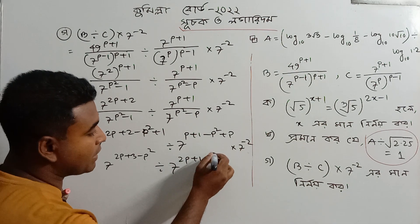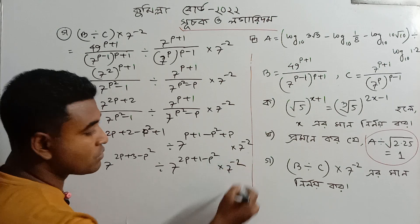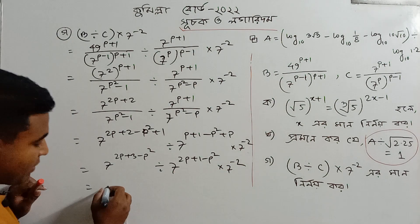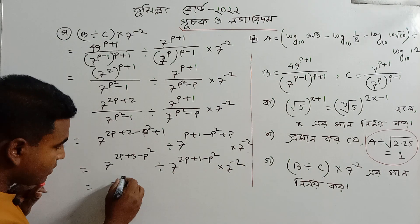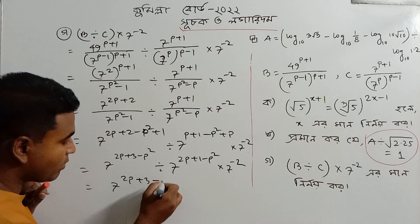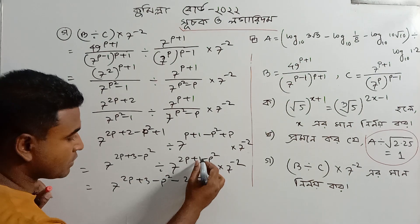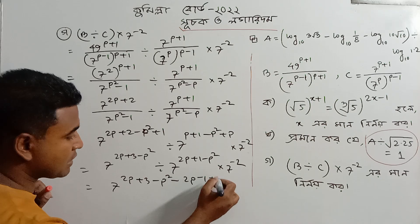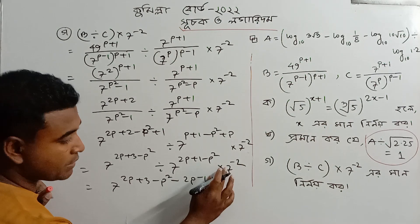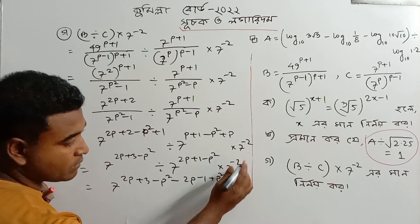7 to the power p plus 1 minus p squared into 7 inverse 2. What is the power? The power is minus. Minus 2p minus 1 minus p squared into 7 to the power.